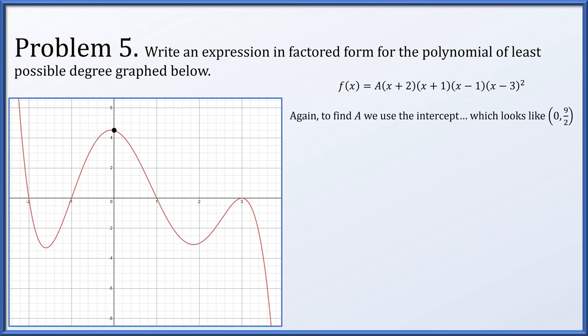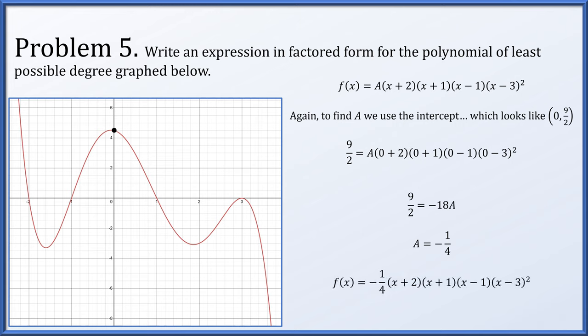To determine the constant, we use the intercept. It appears to be at 9 halves (4 and a half). Plugging in x = 0, f(x) should equal 9 halves: 9/2 = a times (2)(1)(negative 1)(negative 3 squared). This simplifies to 9/2 = negative 18a. Dividing both sides by negative 18 gives a = negative 1 fourth. So f(x) = negative 1 fourth times (x plus 2)(x plus 1)(x minus 1)(x minus 3) squared.